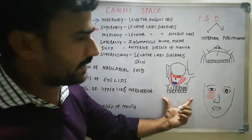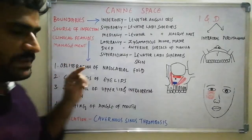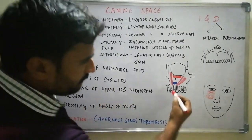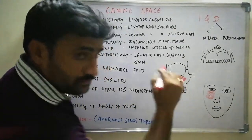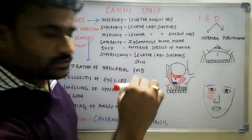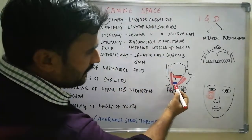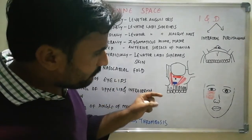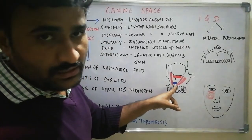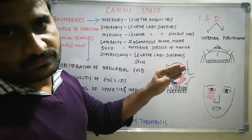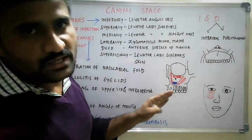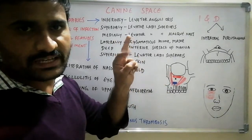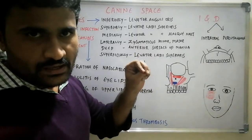If you remember this diagram you can write the boundaries. The main source of infection is the long-rooted canine tooth. When the root of the canine tooth is long enough to pass the muscle attachment of the levator anguli oris, it will involve canine space infection. In some cases, if the root of the first premolar is above this muscle attachment, there are also chances of canine space involvement. So the two sources are the canine and the first premolar.